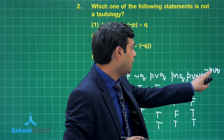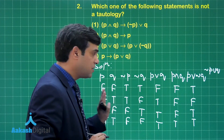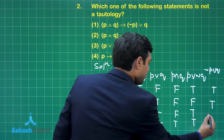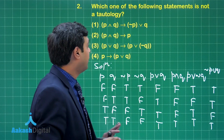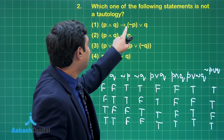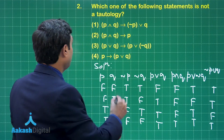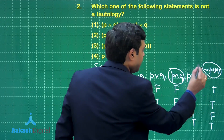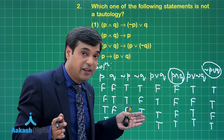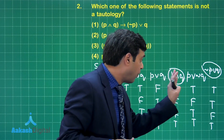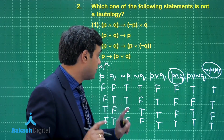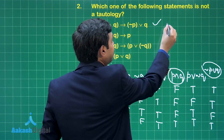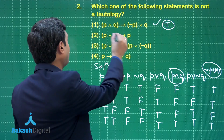For (negation p or q): looking at those two columns, whenever we see T we write T — result is T, T, F, T. Now the question asks: if (p and q) then (negation p or q). For an if-then statement, the output is false only when the second part is false. Here the second part is nowhere false, so the result is a tautology. This is not our required answer since the question asks which is NOT a tautology.